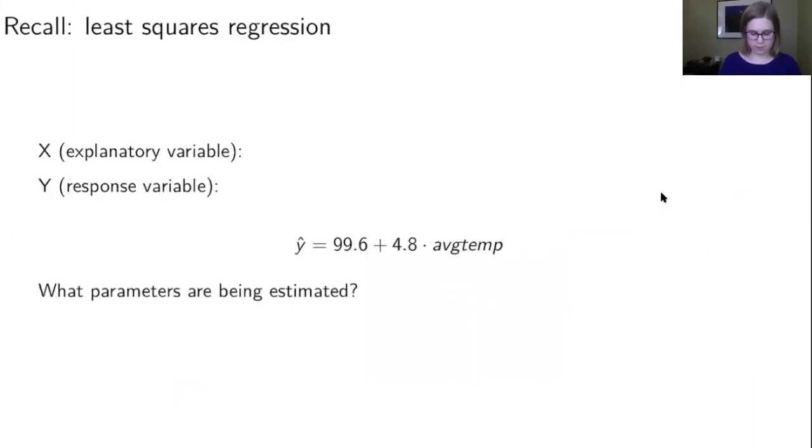We have an explanatory variable and a response variable in least squares regression. In this case, our explanatory variable was the average temperature, and our response variable was the volume on the trail.